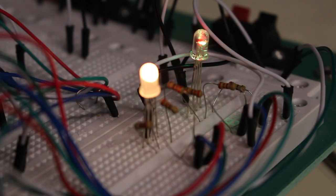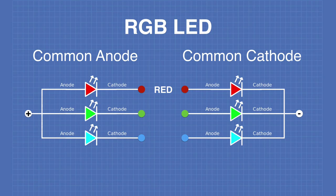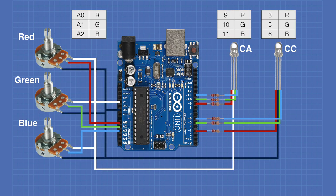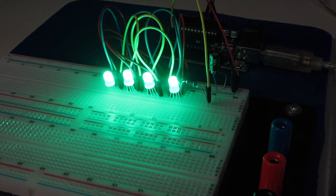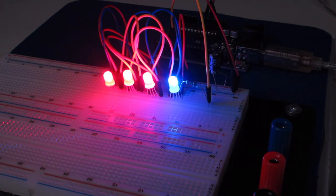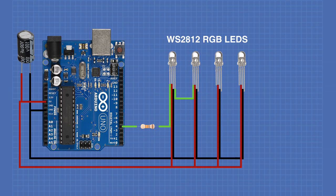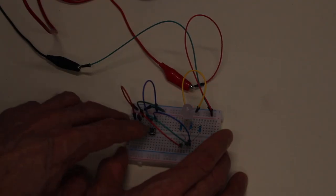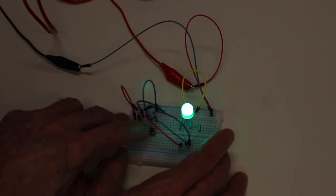Today in the workshop we'll be working with RGB LEDs. We'll learn how these devices work and how we can use both common anode and common cathode LEDs with an Arduino. We'll also be working with addressable LEDs, also known as NeoPixels. It's a colorful episode today, so welcome to the workshop.